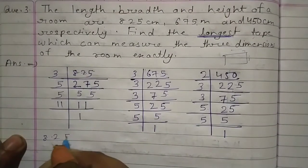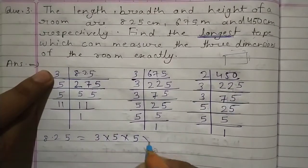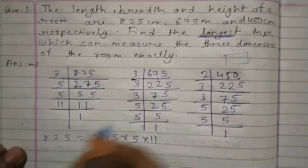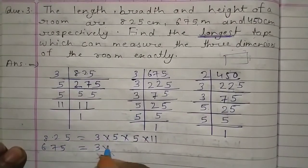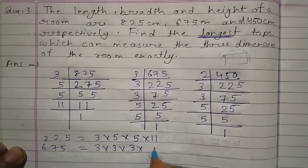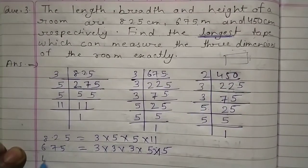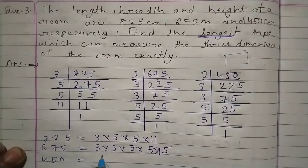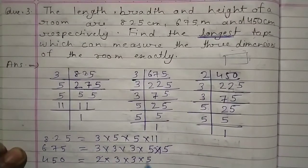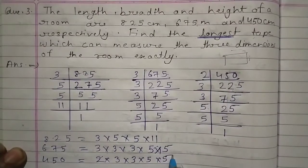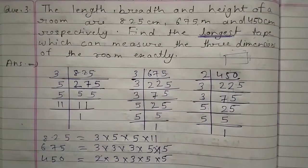अब सभी को write कर लेते हैं: 825 = 3 × 5 × 5 × 11; 675 = 3 × 3 × 3 × 5 × 5; 450 = 2 × 3 × 3 × 5 × 5. अब सभी में common factors check करना है।